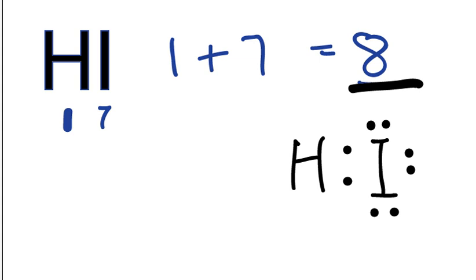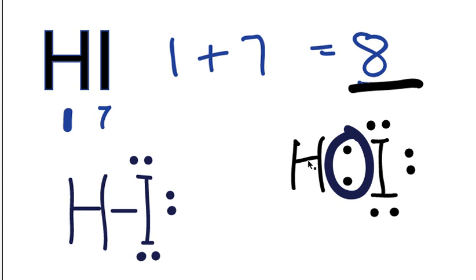We can also take and write the structural formula for hydroiodic acid, and that will look like this right here, where these 2 bonding electrons will be represented by a single bond right there.